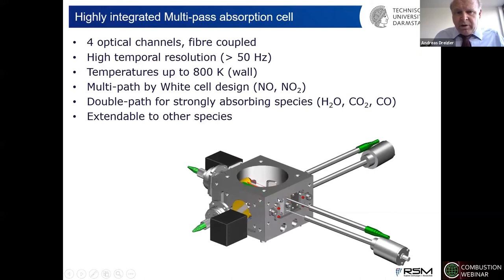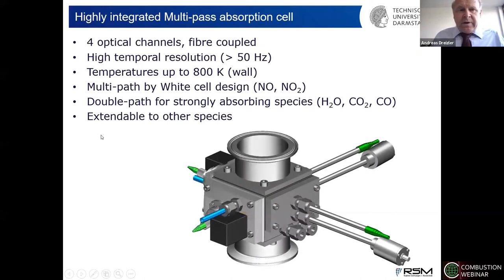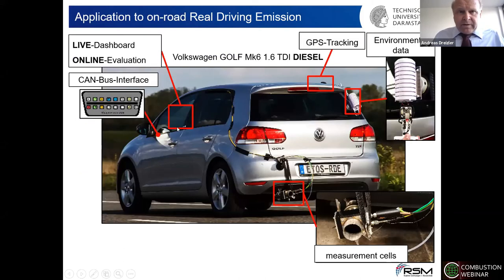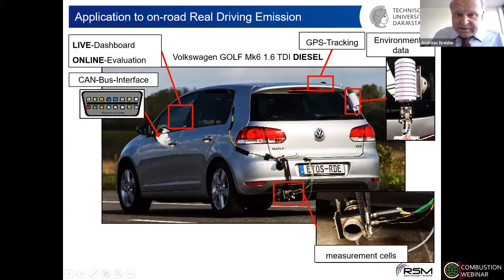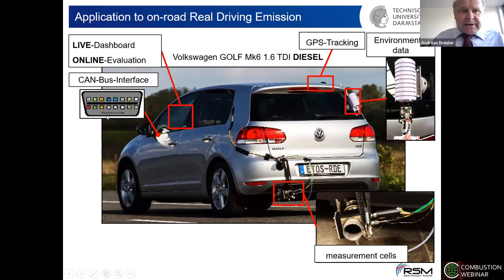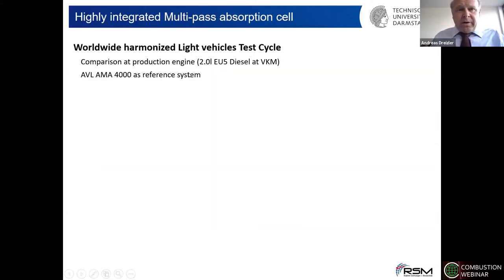The system is very compact and robust. For real driving emissions, we tested it on a car, with this sensor installed and coupled via fibers to electronics inside. We track position, environmental data, and have access to the CAN bus interface to link to engine control. As a capability demonstration, we compared our sensor to the commercially available AVL mobile exhaust gas analyzer, tested in a two-liter EU5 engine in a neighboring institute's test bench, comparing performance in the WLTP cycle.